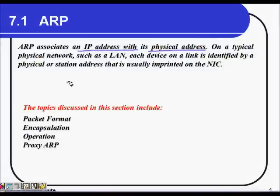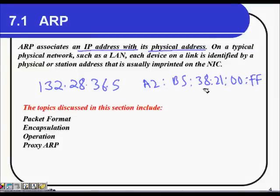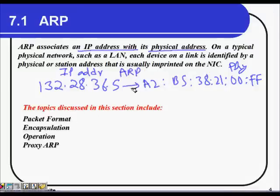ARP associates an IP address with its physical address. For example, there will be a table which maps an IP address like 132.28.36.5 to a physical MAC address like A2:B5:38:21:00:FF — six bytes of MAC address. This mapping done by ARP is helpful because when sending packets on a LAN we use frames, and those frames use the MAC address for communication.